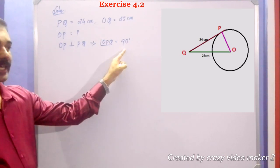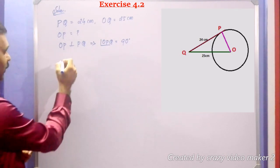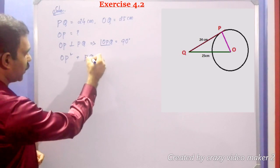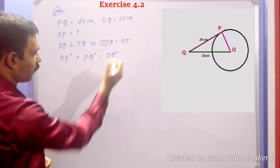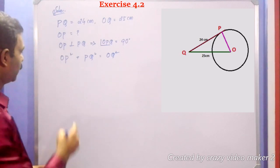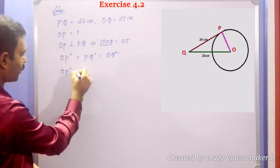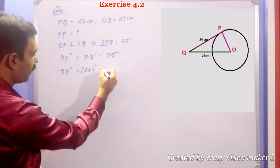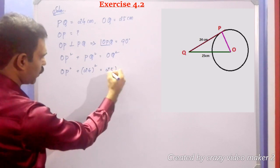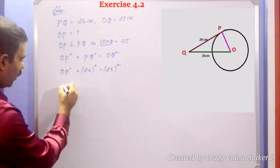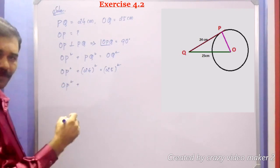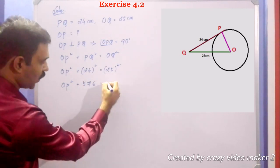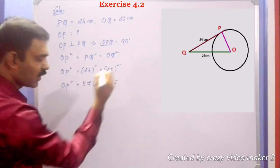Since angle OPQ equals 90 degrees, OQ is the hypotenuse. By the Pythagoras theorem, the square of the hypotenuse equals the sum of the squares of the other two sides. So OP squared plus PQ squared equals OQ squared. Substituting known values: OP squared plus 24 squared equals 25 squared, giving OP squared plus 576 equals 625.